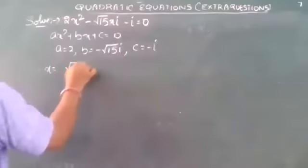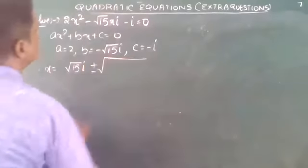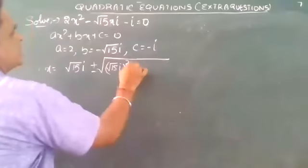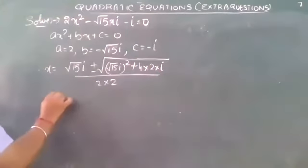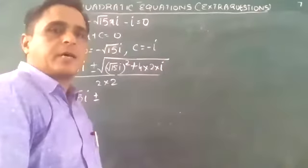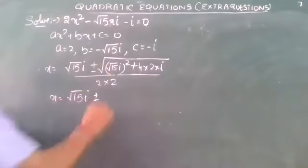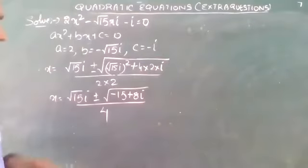Using the quadratic formula: x = -b ± √(b² - 4ac) / 2a = √15·i ± √[(−√15·i)² - 4·2·(-i)] / 4. Now (−√15·i)² = 15·i² = -15. So under the root: -15 + 8i. The discriminant becomes -15 + 8i divided by 4.